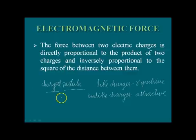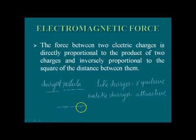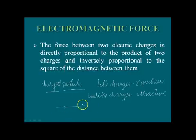When charges are in motion, they produce magnetic effects. If this is a conductor and charges are moving in this conductor from one direction to another, this motion of charges constitutes electric current. Which means this conductor is carrying electric current, and along with electricity, it will also produce a magnetic effect surrounding the conductor.